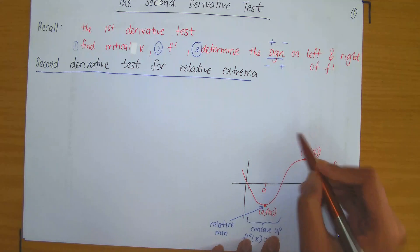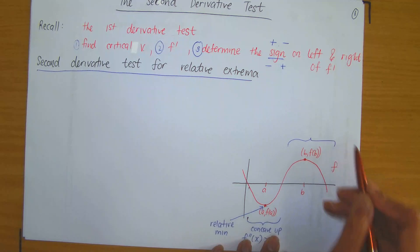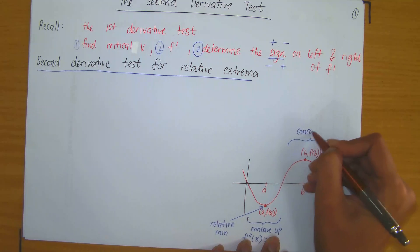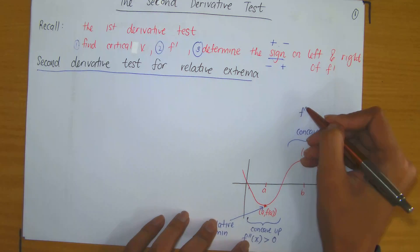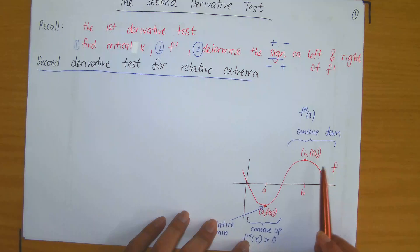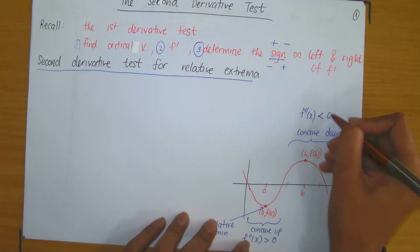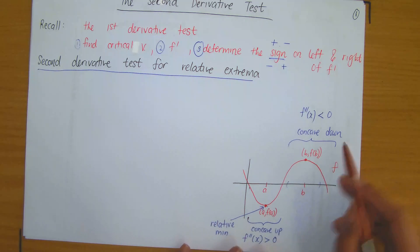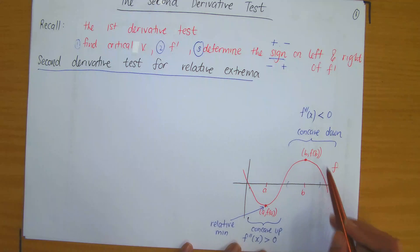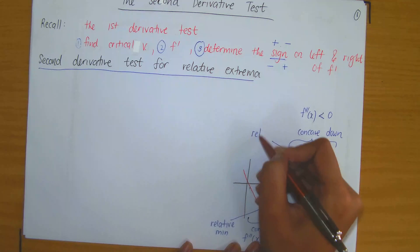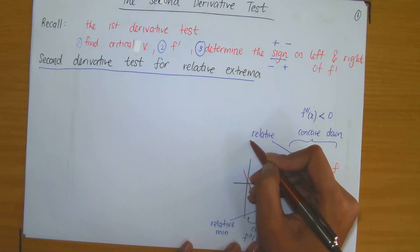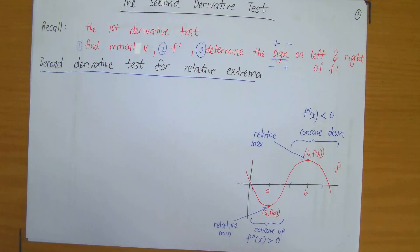Similarly, if we investigate what's happening on the other half of the graph, observe that the graph is concave down. Based on our definitions of concave down, it meant that the second derivative evaluated at x values in a reasonable interval around point B was negative — less than 0. And observe that in this region where the graph is concave down, we have a relative maximum. So it's clear, graphically, that concavity relates to extrema.